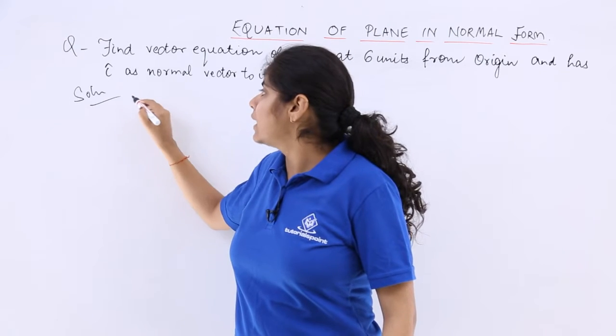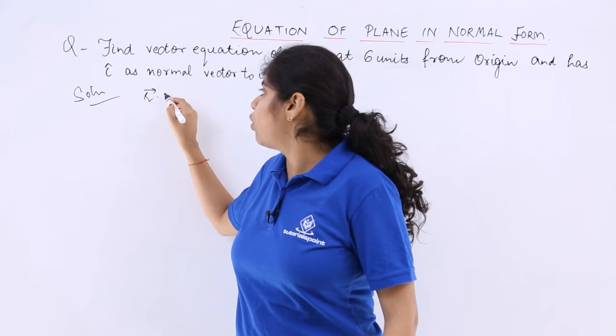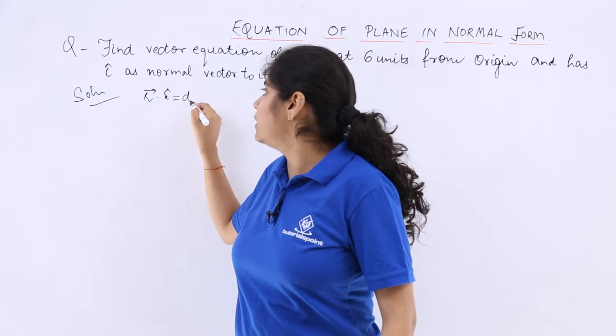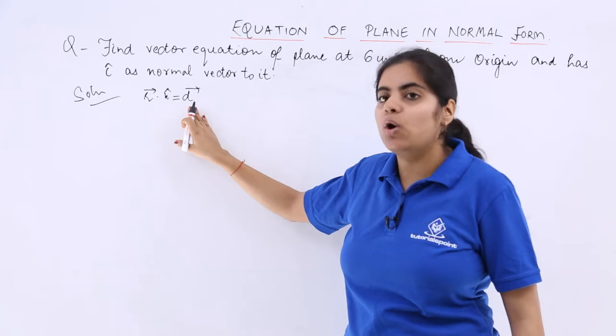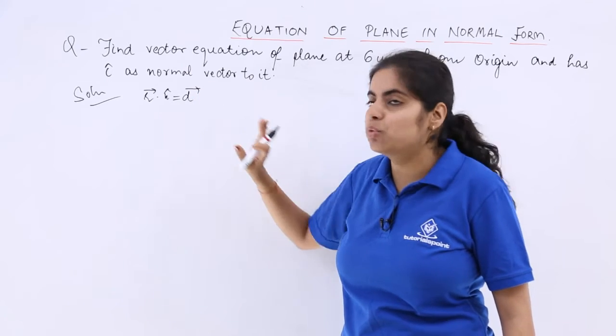So the vector equation can be written as r vector dot n cap is equal to d. This we studied where d was the distance from the origin, specifically, or p also you can write here if I remove this vector sign.